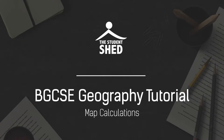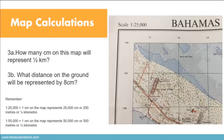Hello students. In today's BGCSE geography tutorial we will look at map calculations, so let's get started. Question 3a says: how many centimeters on this map will represent half of a kilometer? Question 3b says: what distance on the ground will be represented by 8 centimeters?